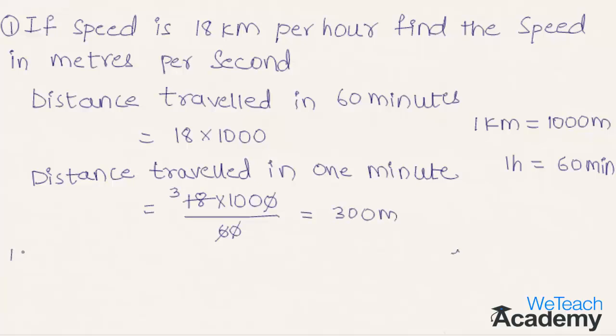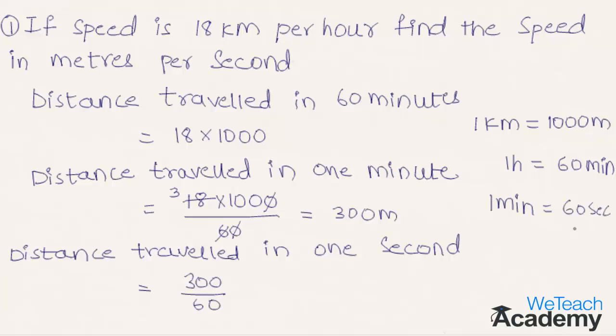Now let us find the distance traveled in 1 second. The distance traveled in 1 minute is 300 meters divided by 60, as we know in 1 minute there are 60 seconds.